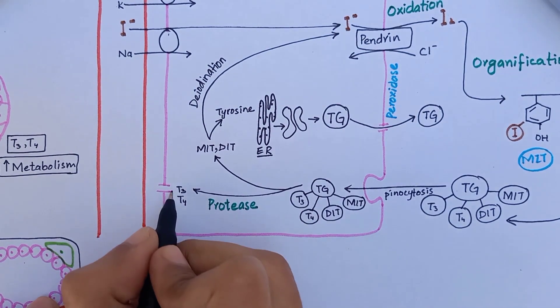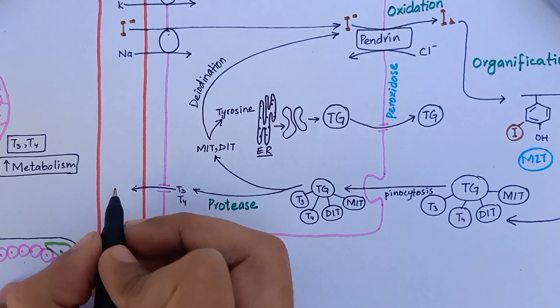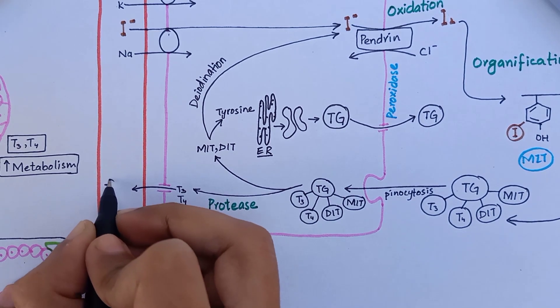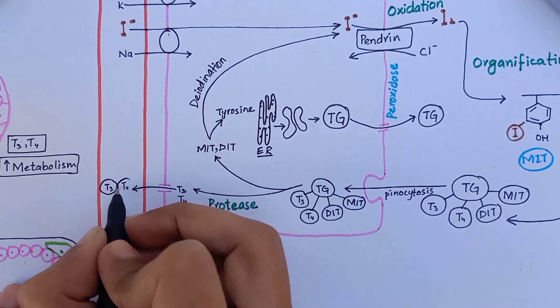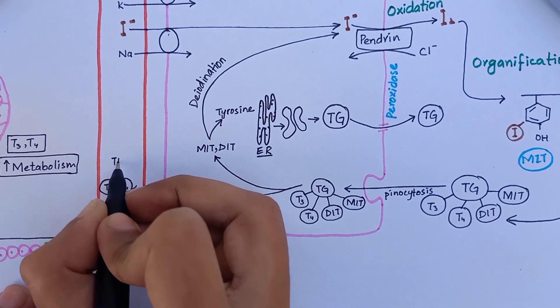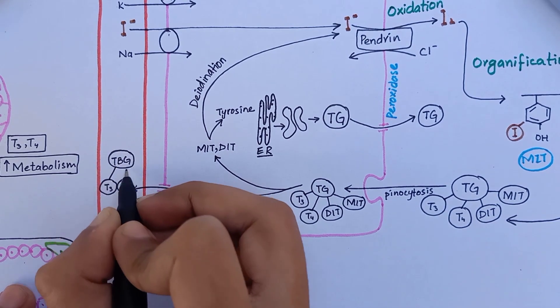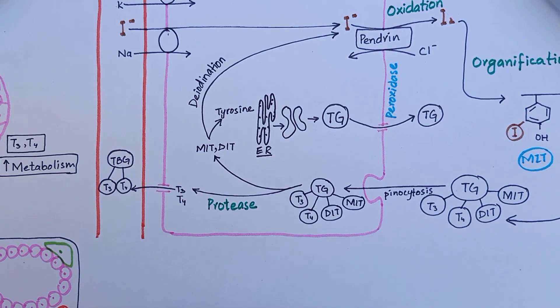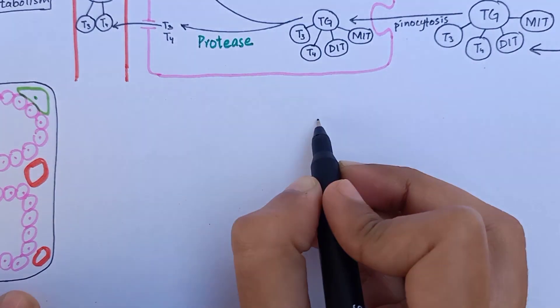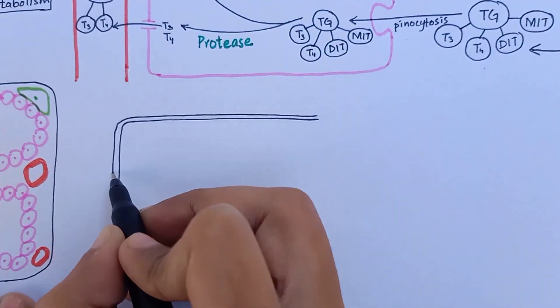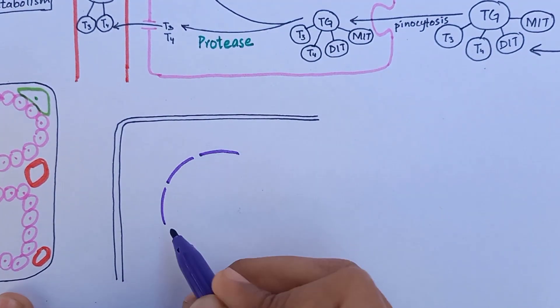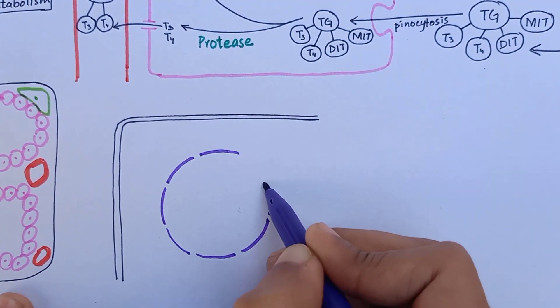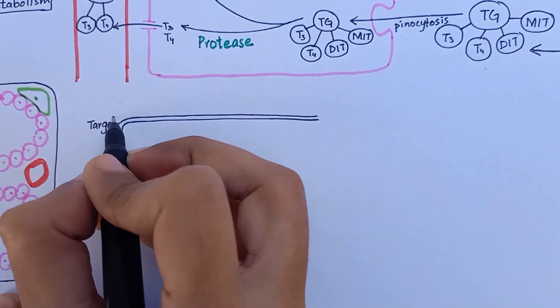This metabolically active T3 and T4 is now released into the blood. Because T3 and T4 are lipid hormones, they cannot travel through blood by themselves. So they immediately get attached to this plasma protein thyroxine-binding globulin which is synthesized by liver. It is important to note here that T4 has higher affinity to thyroxine-binding globulin than T3, while T3 is metabolically more active.